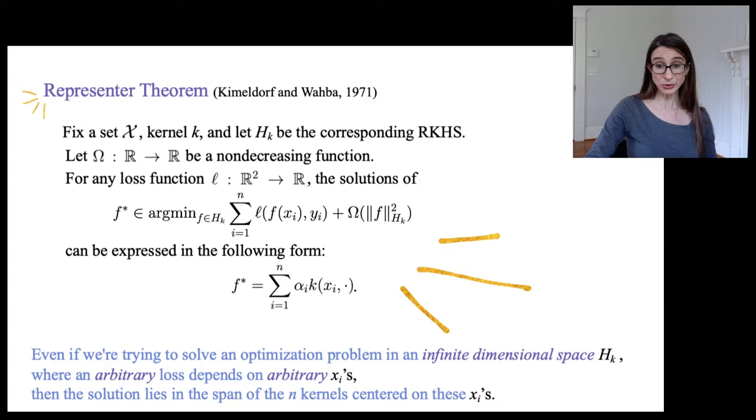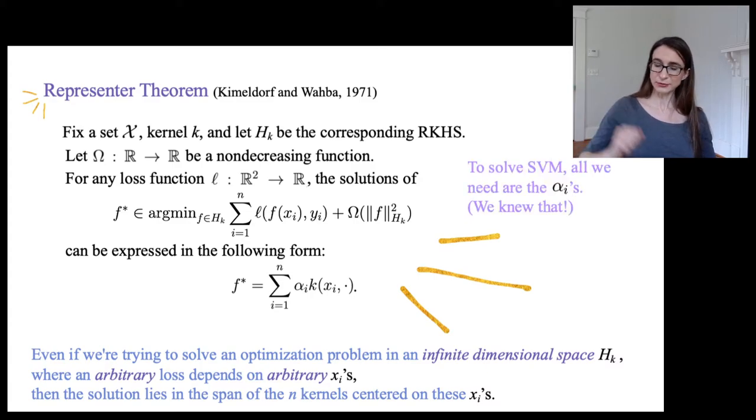And like I said, the proof is only a few lines long, so I actually get to prove it. Okay, and then of course, for support vector machines, what it means for us is that the alphas are all we need. And we sort of knew that, because we knew that in the linear case, but now we get it in the case where there's kernels.